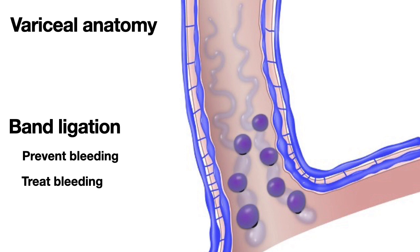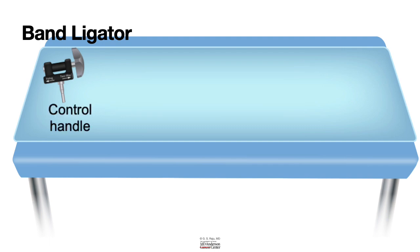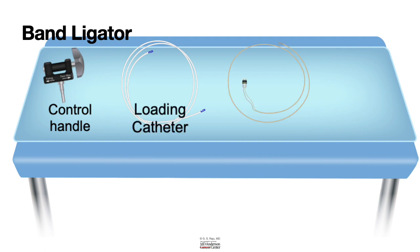Let us learn about how to set up a band ligator. There are several different types of band ligators. For this example, we will use one routinely used in our lab. Here is a band ligator — this is the control handle. You also have a loading catheter, a trip wire, rubber band ligators attached to the cap, and an irrigation adapter.